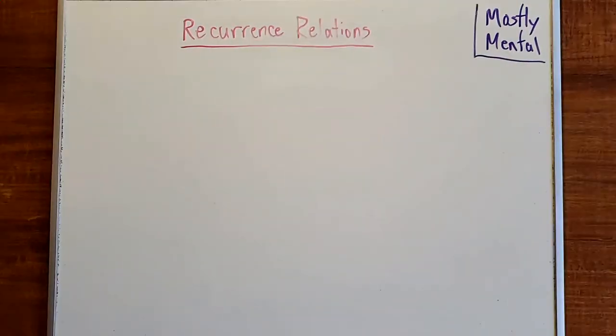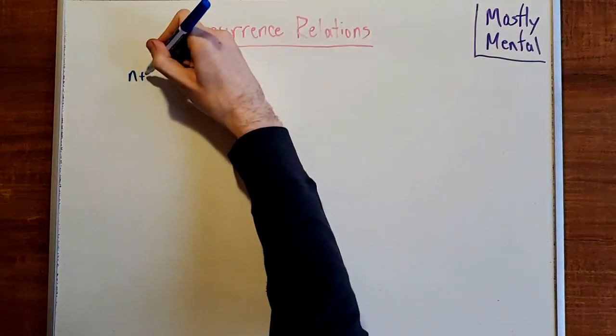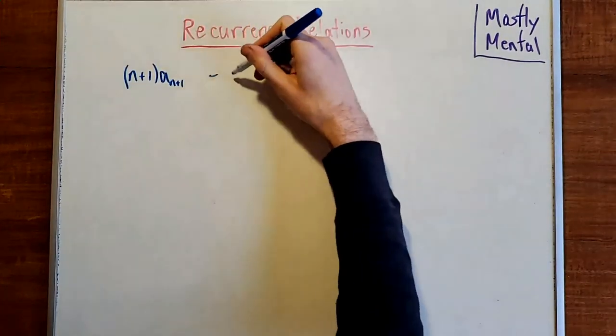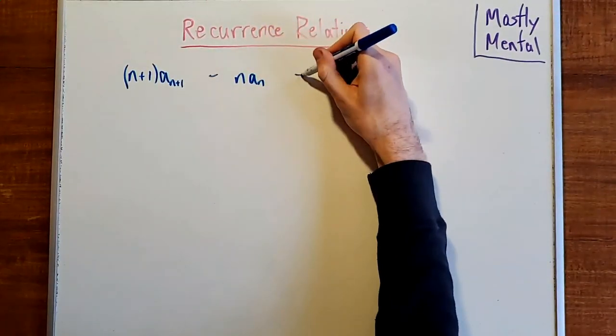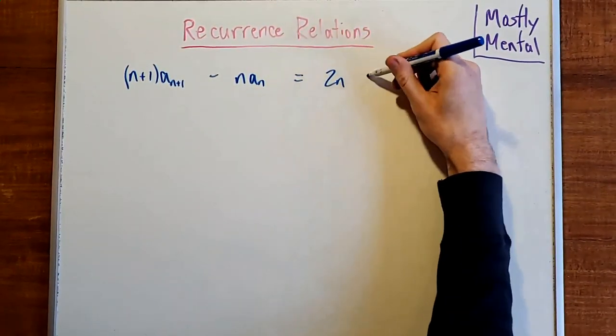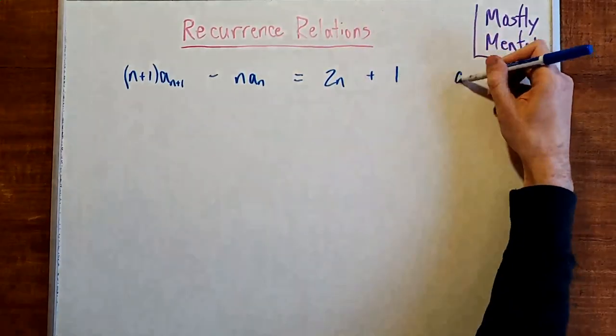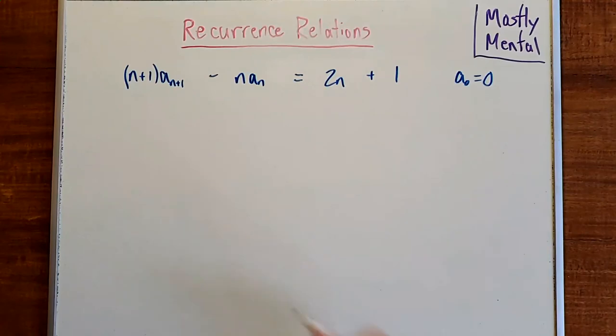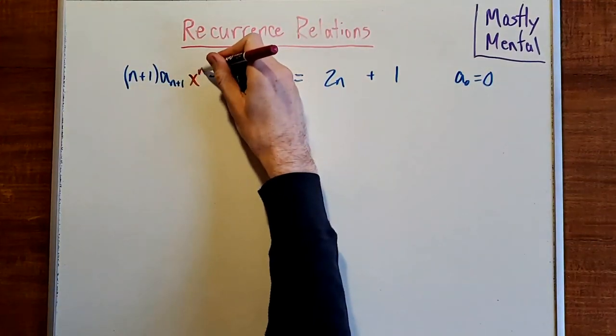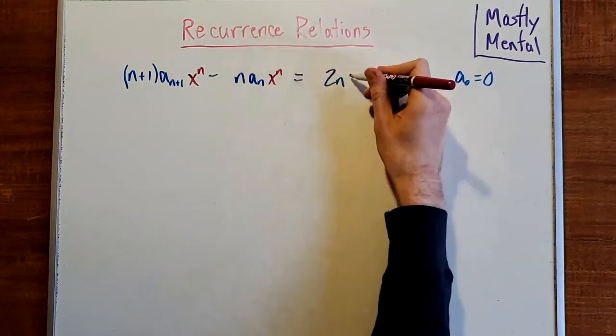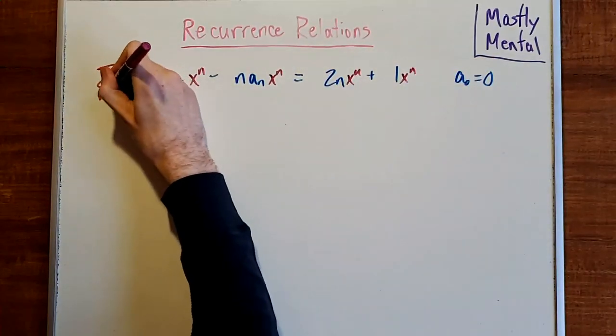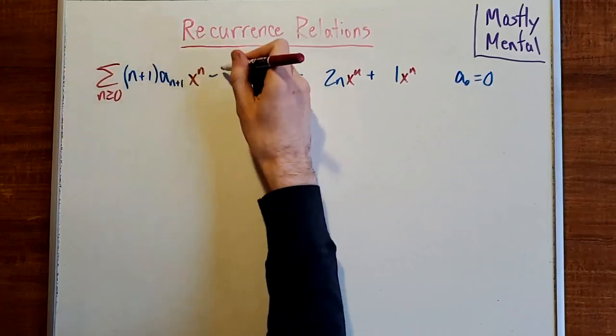Now consider the recurrence (n+1)a_{n+1} minus na_n equals 2n plus 1, where a_0 is 0. Once again, we start by multiplying through by x^n and taking the sum over all possible values of n.